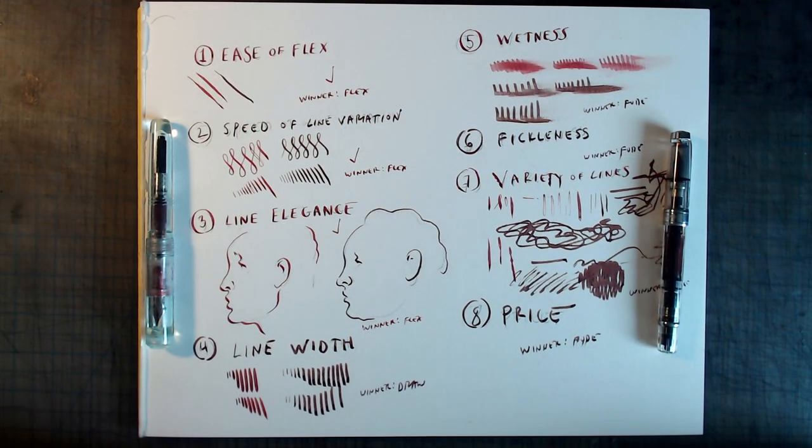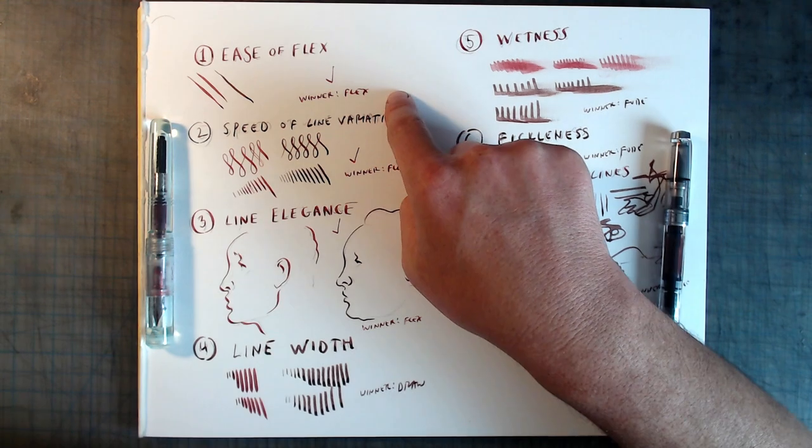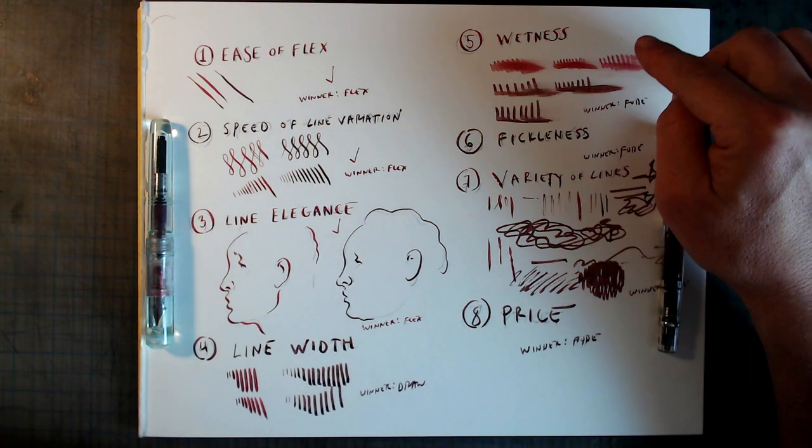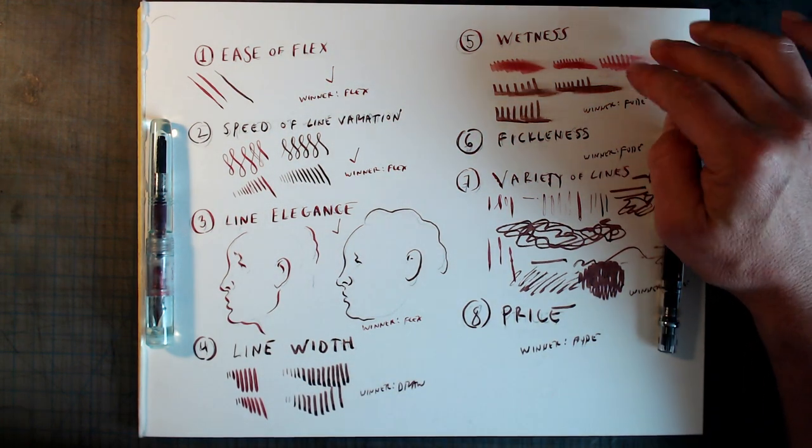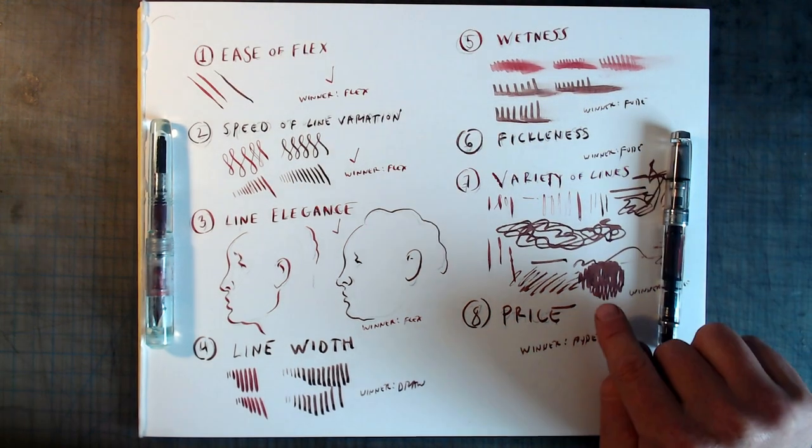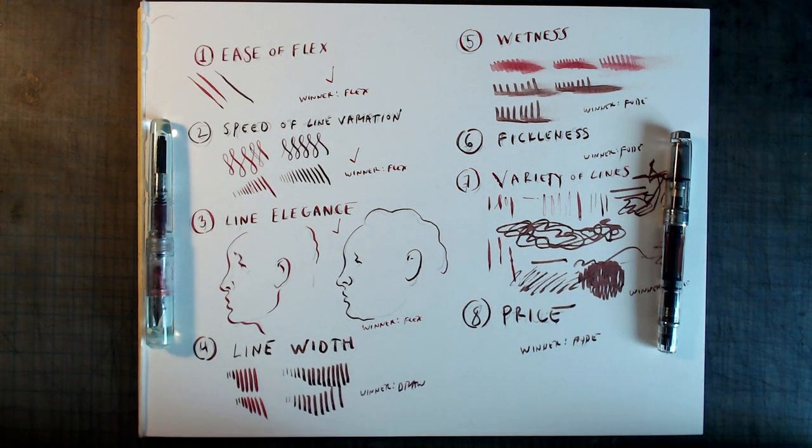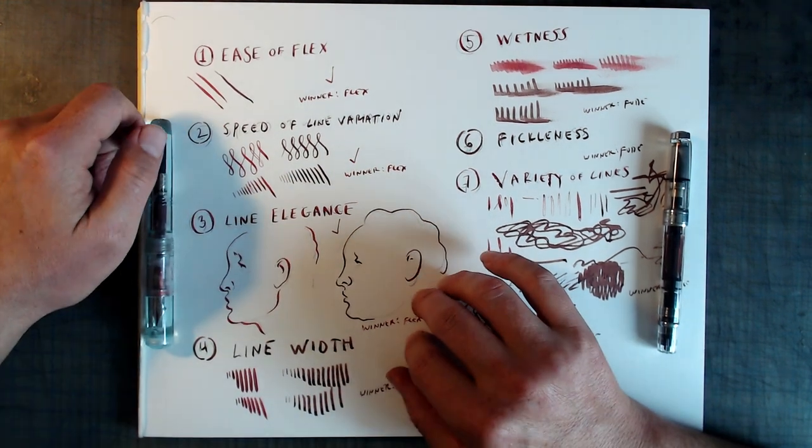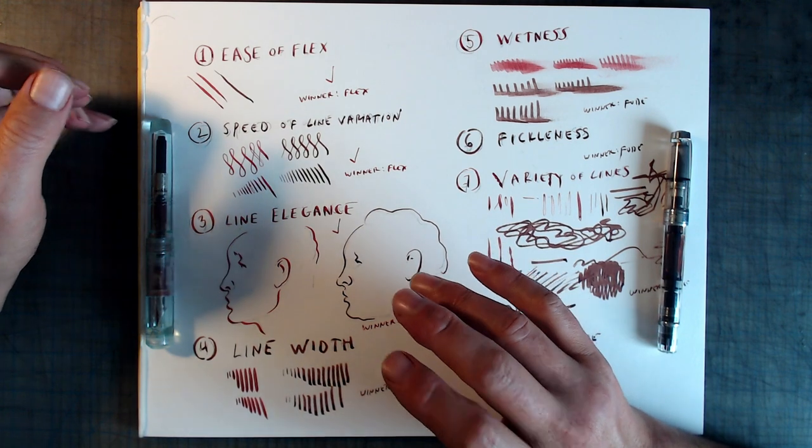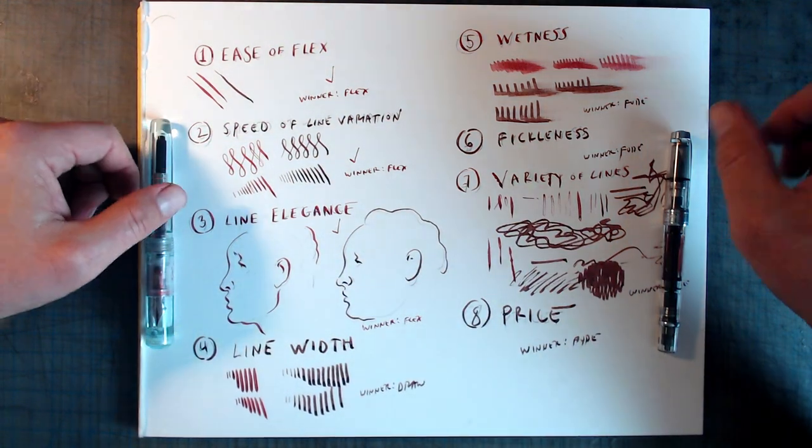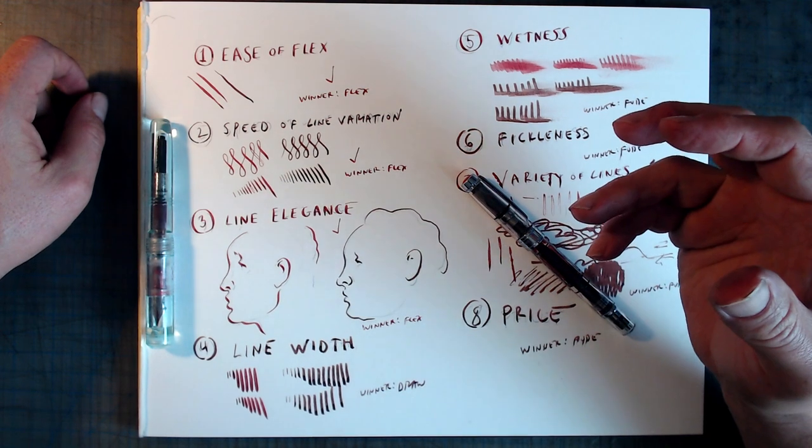Alright, our battle of the nibs is over, and we have flex winning in three criteria: ease of use, speed, and elegance of line. Then we have a draw when it comes to how thick the lines go, and then the Fude wins in the other four categories for wetness, fickleness, variety of lines, and price. Does this mean that I favor the Fude over the flex? Well, not necessarily. I adore flex for what it can do, and there's something mesmerizing and addictive about a really well-performing flex pen, perhaps because it's not all that common. It's a lovely delicate instrument, which in the right hands can do absolutely wonderful things. But it is very much a fetishized instrument, an object of desire by collectors, and my main point of this video, I think, is that there are other kinds of pens that function equally well, such as the Fude, or even better, depending on what you're looking for out of your artwork.